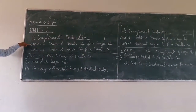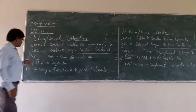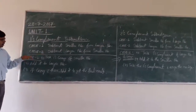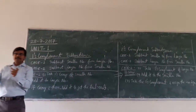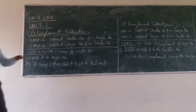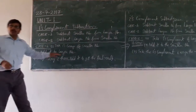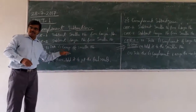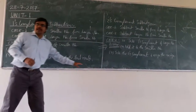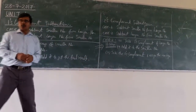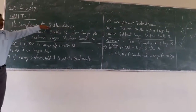Let us see Case 1: when we are subtracting the smaller number from the larger number. These are the steps to follow. First, we have to take the 1's complement of the smaller number. From the two numbers, identify the smaller number and take its 1's complement. Then we add it to the larger number. After adding, if there is a carry, that carry needs to be added to get the final result. These are the steps for Case 1 of first complement subtraction.